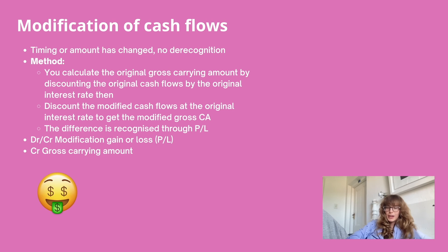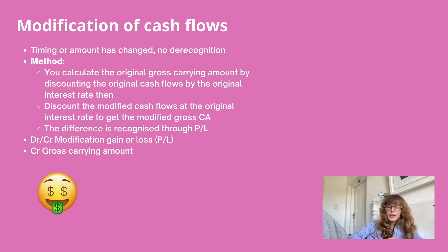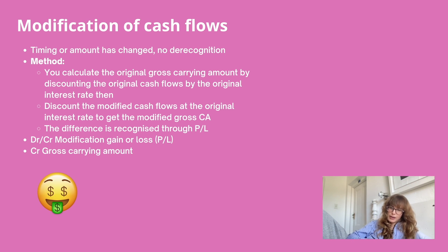The second last topic is modification of cash flows — where there's been a change in either the timing or the amount of cash flows. For example, a debtor says they can only pay 80 rand instead of 100 rand. This only applies to the amortized cost model and fair value through OCI on the combined model, as those are the only two dealing with contractual cash flows. To calculate the modification: find your original gross carrying amount by discounting original cash flows at the original interest rate, then calculate your modified gross carrying amount using modified cash flows at the original interest rate. The difference is a modification gain or loss through profit and loss, with the debit or credit going to your gross carrying amount.